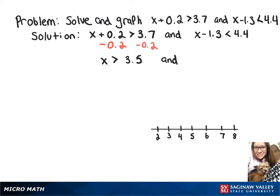Then going back to the right, we're going to add 1.3 to both sides, which leaves us with x is less than 5.7.